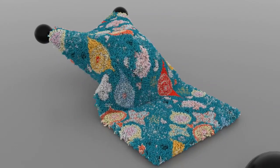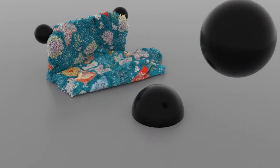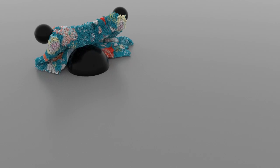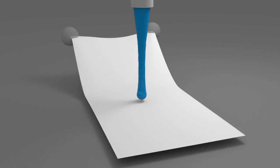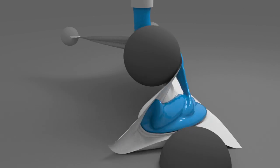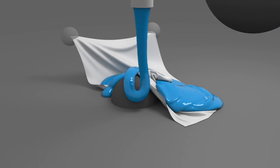In this shag carpet example, we show that our method can handle simultaneous collisions between triangles and segments. Our method naturally handles coupling of cloth with other materials simulated with MPM.